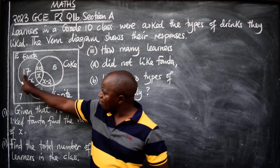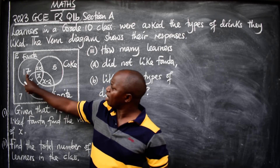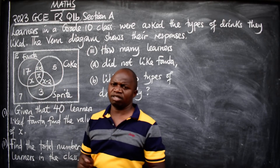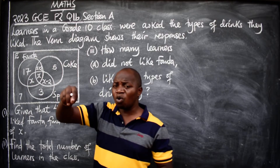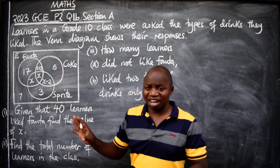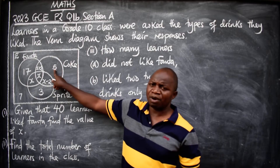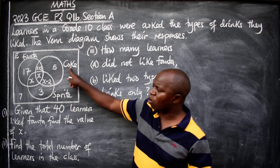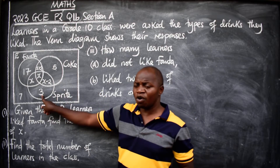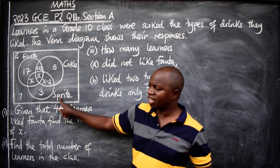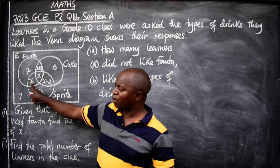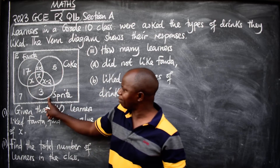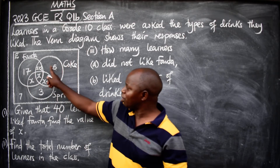Do you know the meaning of this 17? The 17 means those who like Fanta only. There's a key word: 'only.' You need to understand the language. The 5 here means those who like Coke only. The 3 means Sprite only.